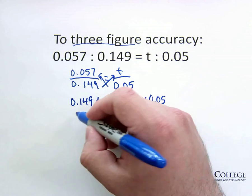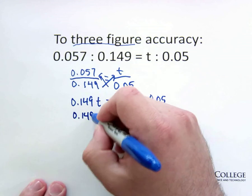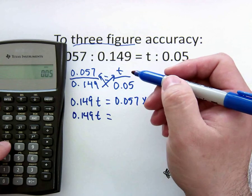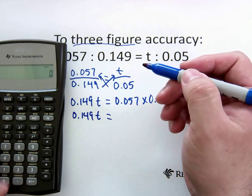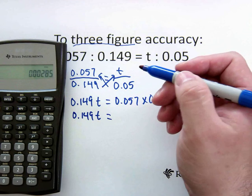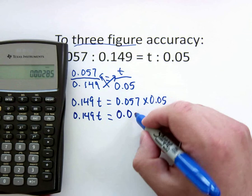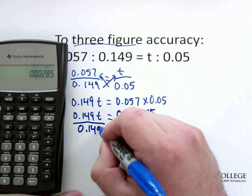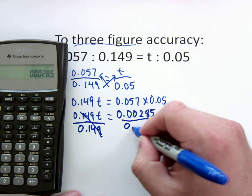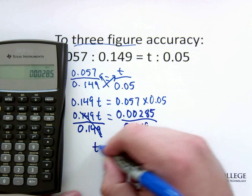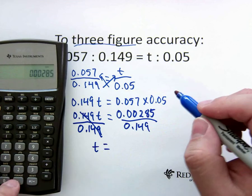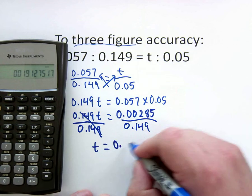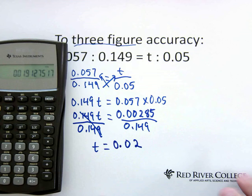We'll now bring the calculator in. 0.057 times 0.05. 0.00285, divide by 0.149, t is equal to, and three-figure accuracy, so 0.02.